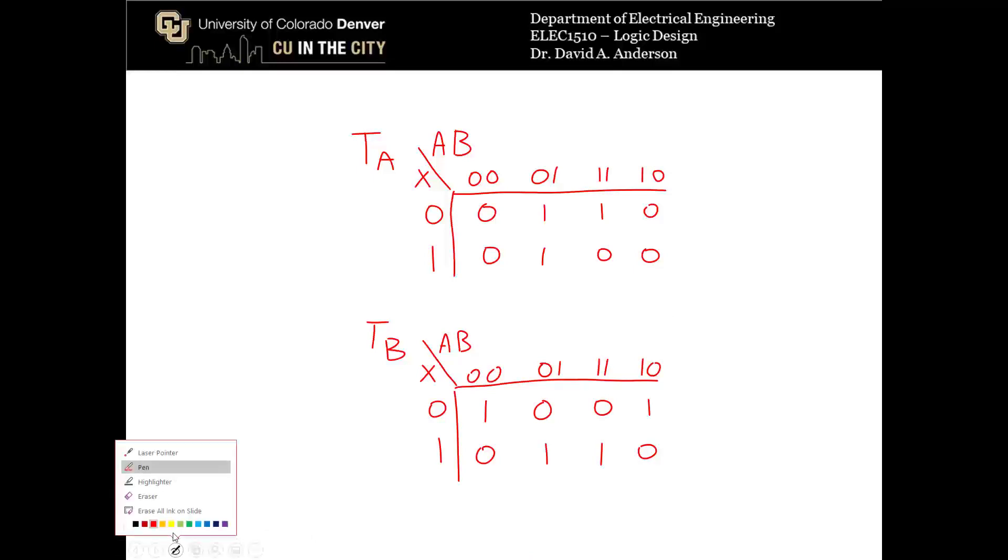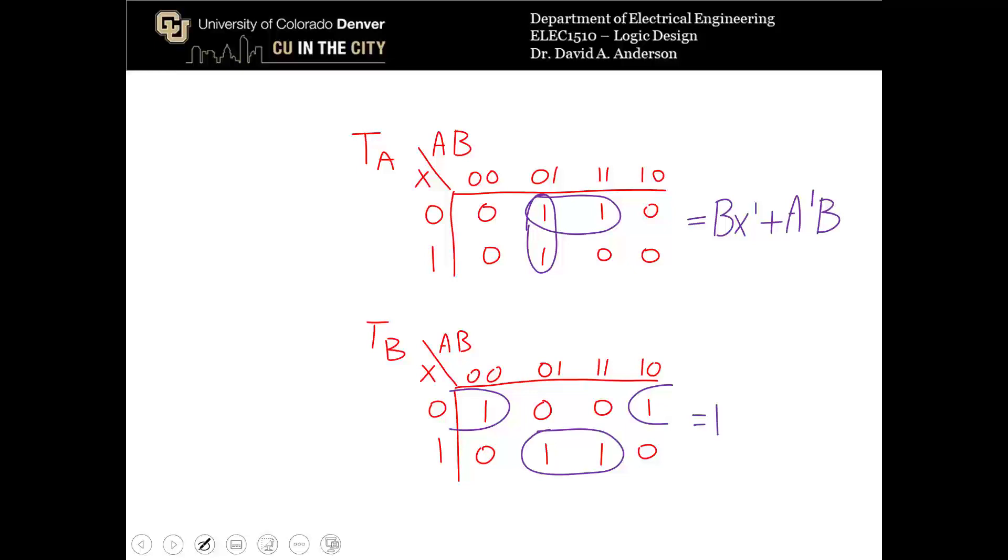Alright, so the k-maps for T sub A and T sub B look like this. So we can circle bubbles to make SOP expressions. For T sub A, we will get these two bubbles. So T sub A is equal to Bx prime or A prime B. And T sub B is going to be equal to B prime x prime or Bx.